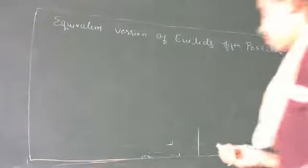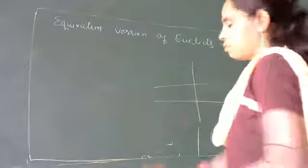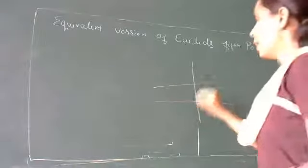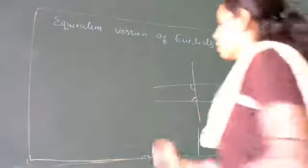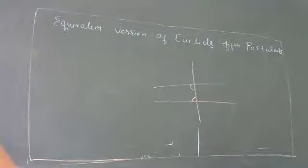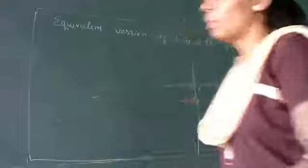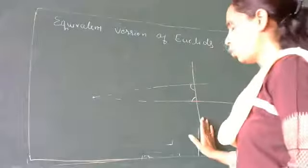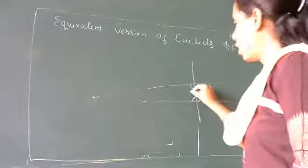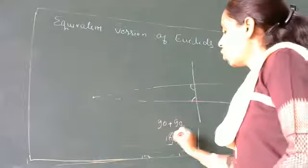What is Euclid's fifth postulate? If any two straight lines are there, and a third line falls on those two lines, then the interior angles on one side — which fall inside those two lines — will be less than two right angles.